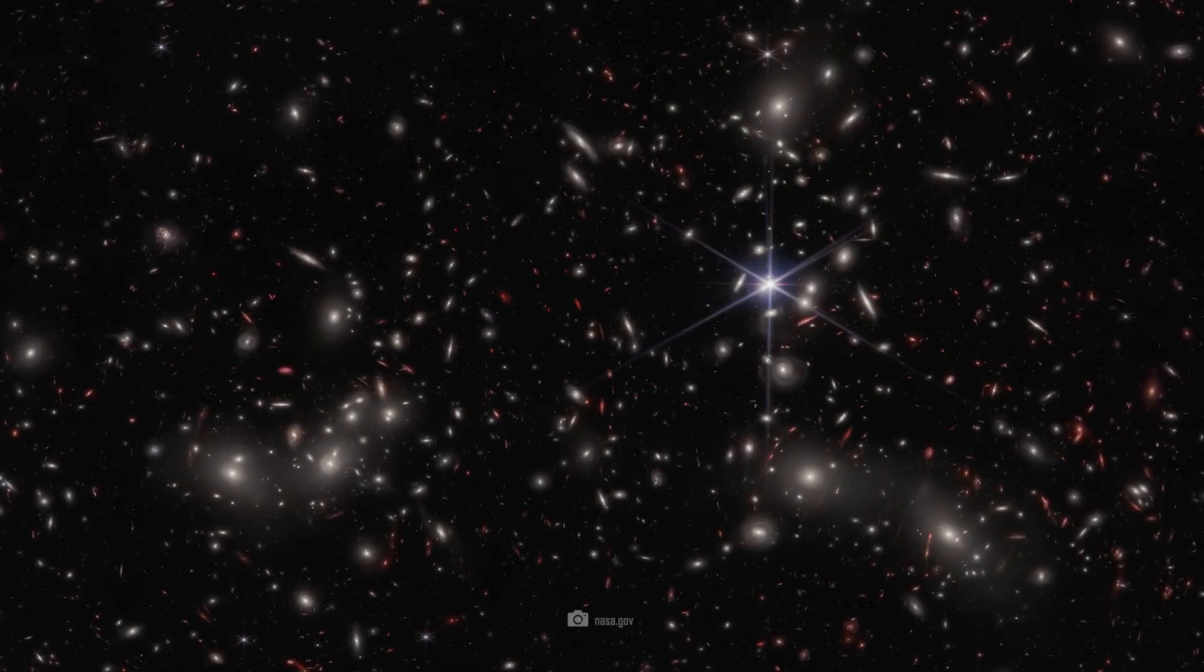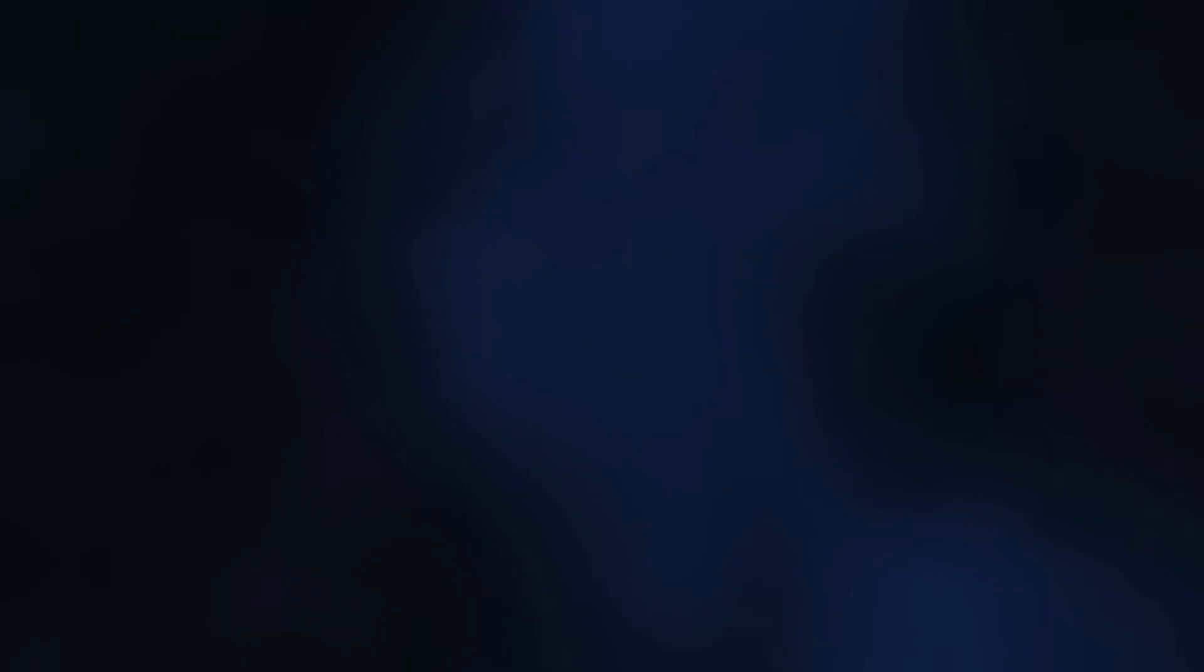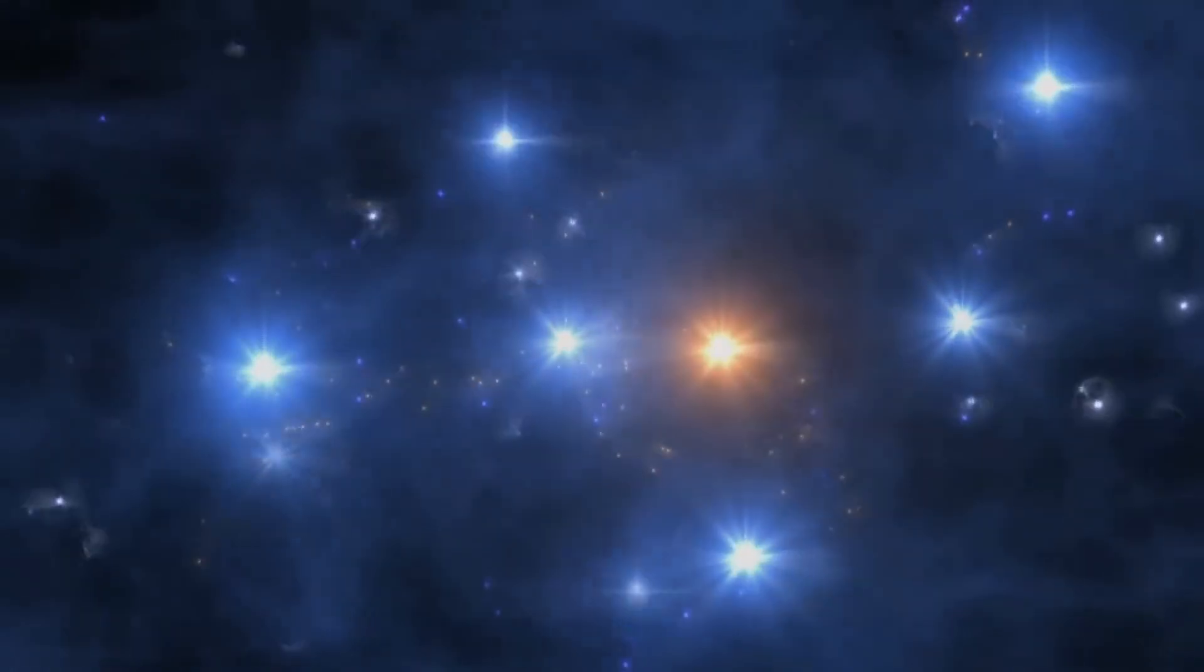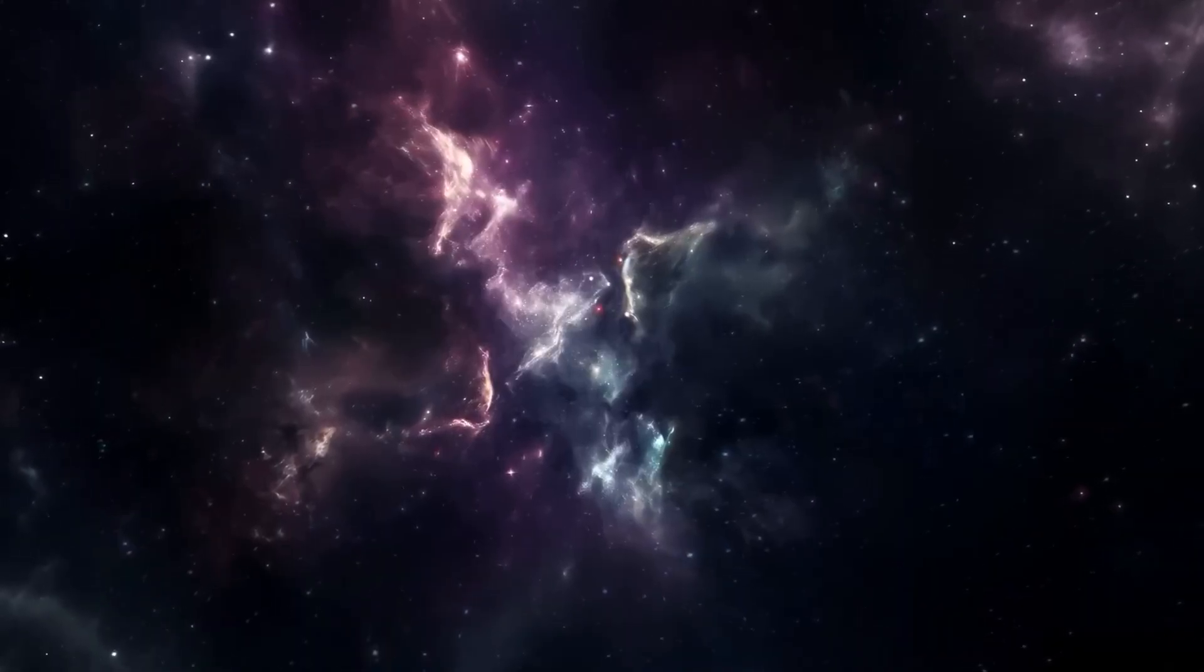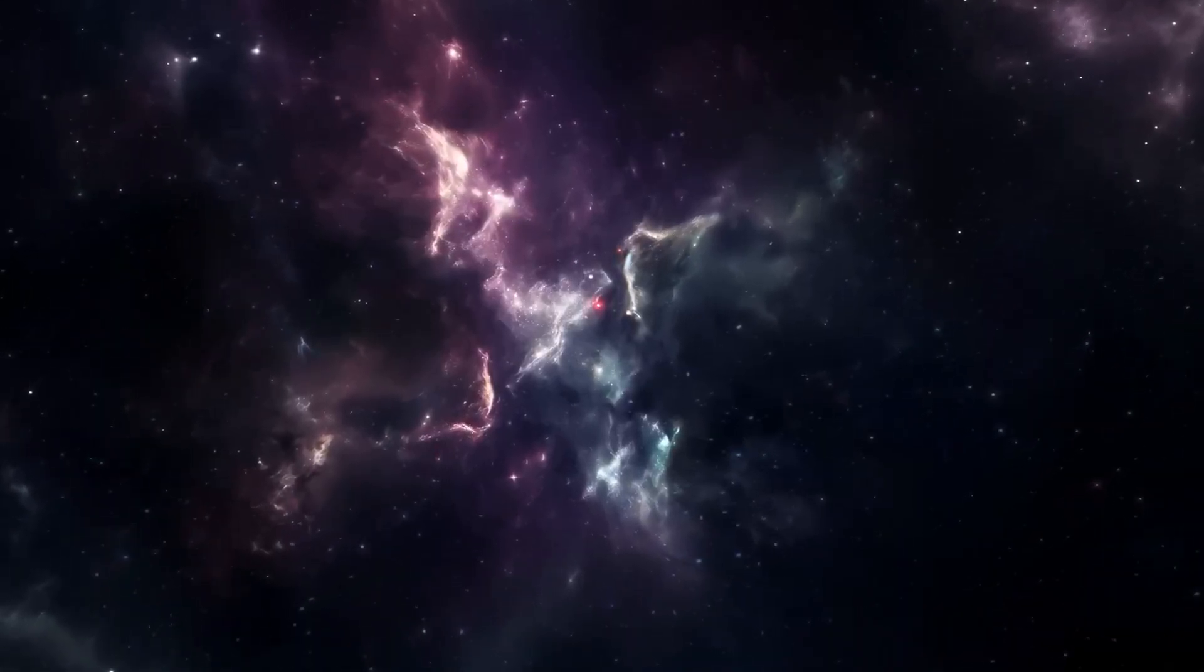Our own galaxy, the Milky Way, took 13.8 billion years to form, but the Webb Telescope discovered galaxies like our Milky Way just a few million years after the Big Bang. This discovery could transform our understanding of how the earliest galaxies in the universe formed.